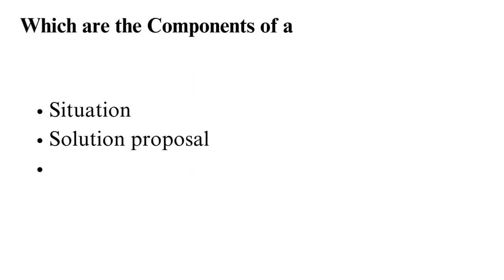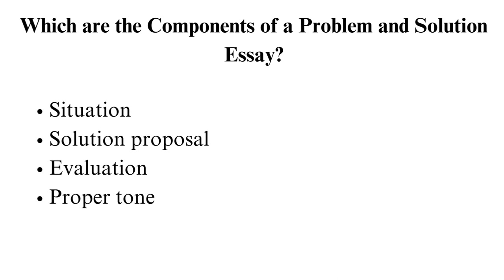Which are the components of a problem and solution essay? When writing a problem and solution essay, ensure you include the following. Situation — it's the background of the problem. It should be short and straightforward for your readers to understand the issue. Problem elucidation — this part states the real problem in question. Assume that your readers know nothing about the issue and explain it in detail.